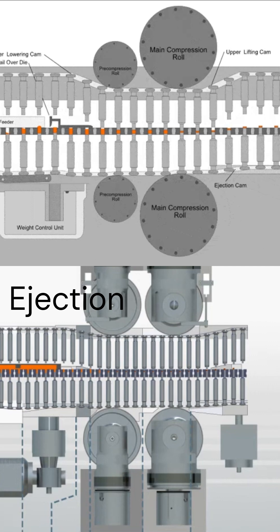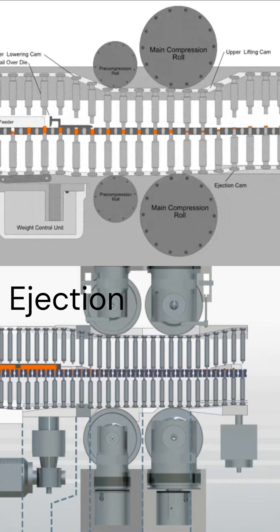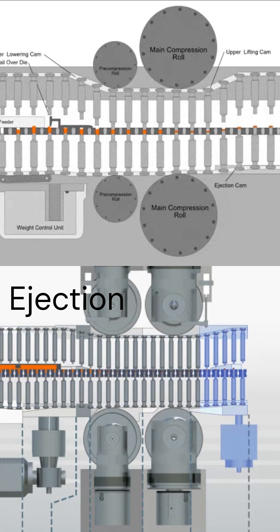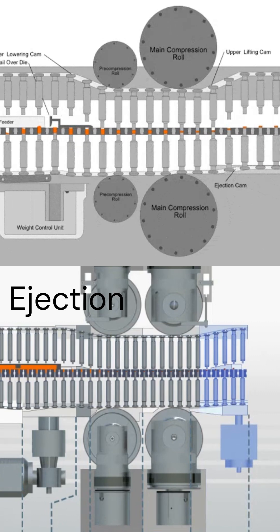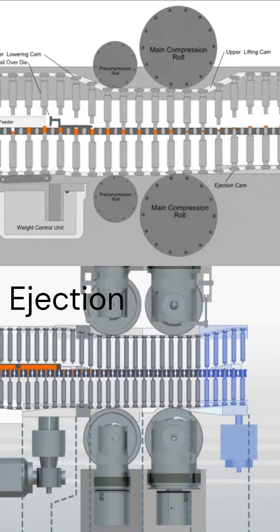At the ejection stage, the lower punch pushes the tablet out of the die. The tablet is then pushed off the punch tip by the ejection finger. At the very end, the tablet falls down the tablet chute.